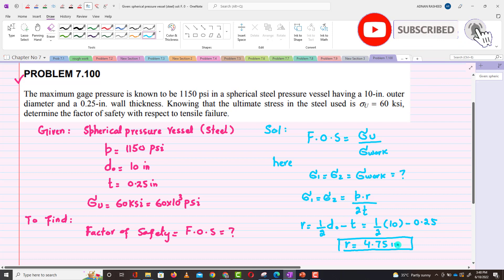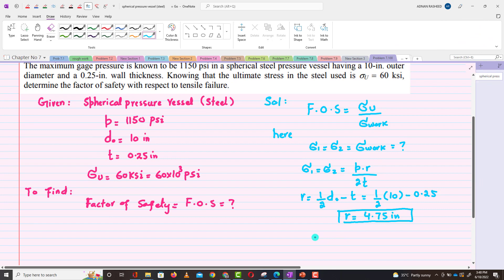Now you can put it. You have P, you have r, you have t, so you can find σ₁ = σ₂ = P·r / (2t). So P is 1150 psi, r is...